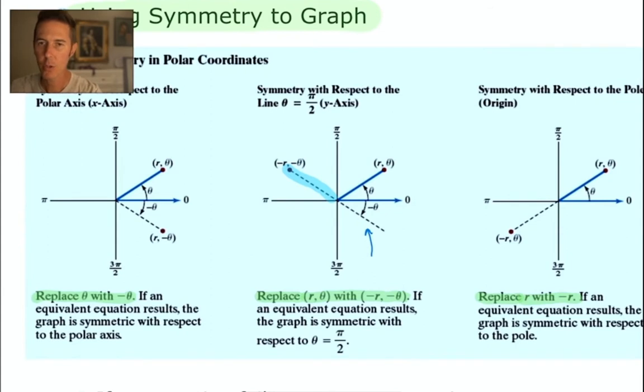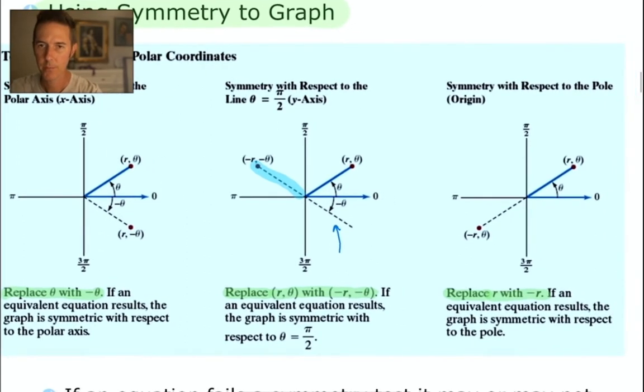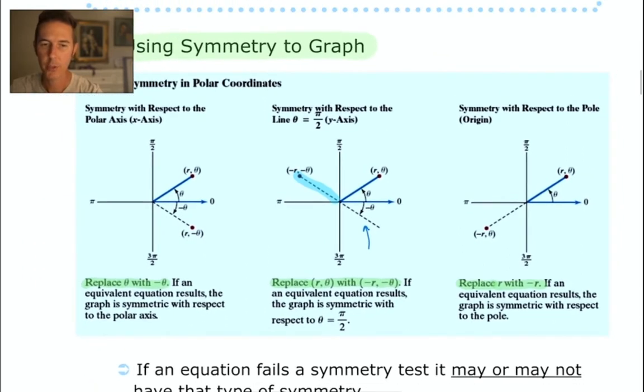Thirdly is pole symmetry, symmetry with respect to the pole. You test for that by replacing r with -r. If you can make the new equation look exactly like the original, the graph will exhibit pole symmetry.